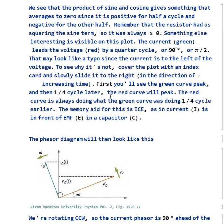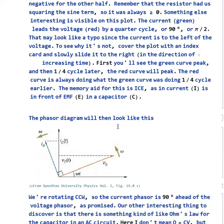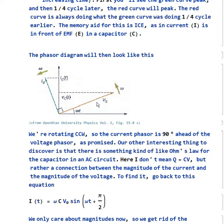The memory aid for this is to remember ICE, as in the current I is in front of the EMF or voltage E in a capacitor. The phasor diagram then looks like this, where we have the voltage phasor here, the current phasor here. Since we're rotating counterclockwise, the current phasor is 90 degrees ahead of the voltage phasor, as we said.